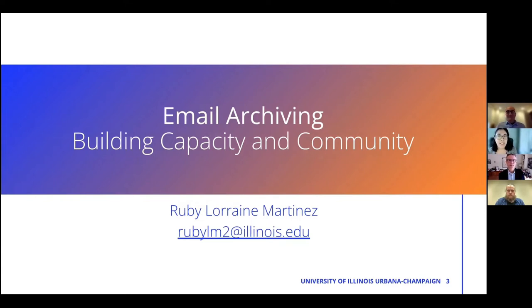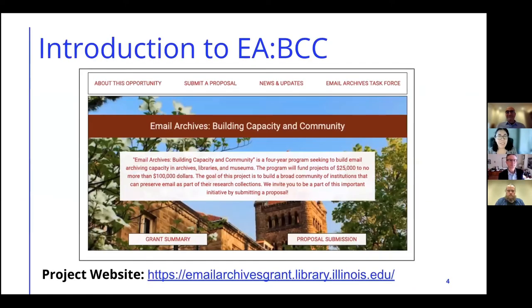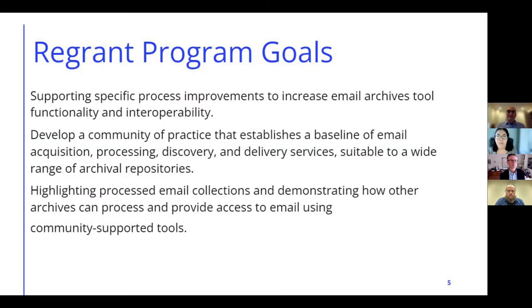This four-year re-grant program provides grants of $25,000 and up to $100,000 across two grant cycles to collectively target known challenges within the email archiving community and build the capacity across institutions. As part of this project, we have specific goals supporting specific processing improvements and increased tool functionality, developing a community of practice that establishes the baseline of the email acquisition, processing, discovery, and delivery services. Our third goal is highlighting specific process email collections.